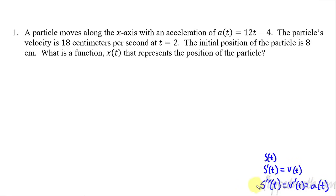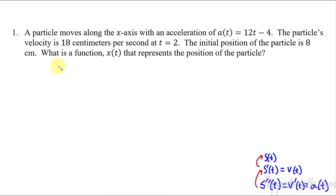So what we're going to do today is go the other direction. If you have acceleration and you want velocity, then you take the integral. And if you have velocity and you want position, then you take the integral again to work backwards. So that's what we're going to do with this first one. A particle moves along the x-axis with an acceleration of 12t minus 4. The particle's velocity is 18 at t equals 2, and it gives us initial position. What is a function x of t that represents the position? In order to get to position, when we start with acceleration, we have to work our way backwards through velocity and then up to position.